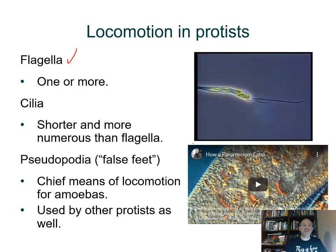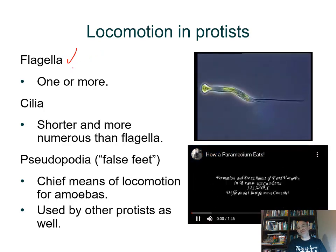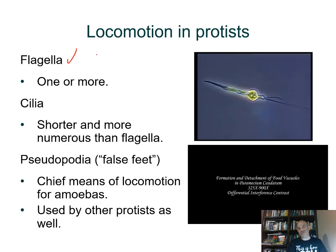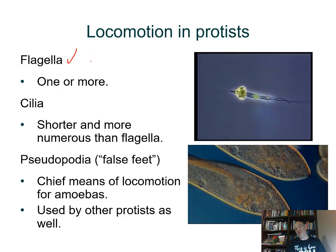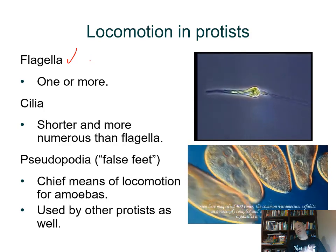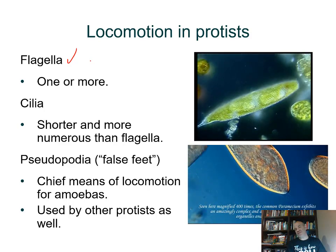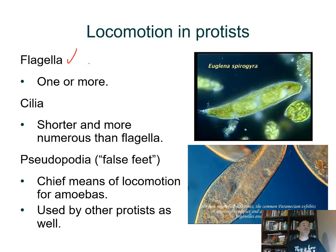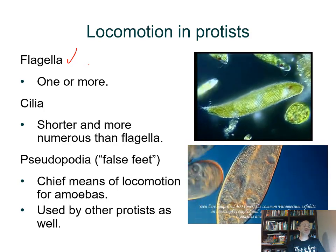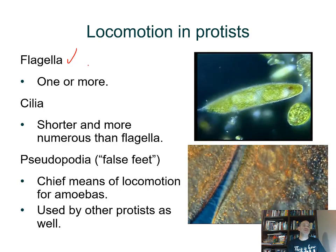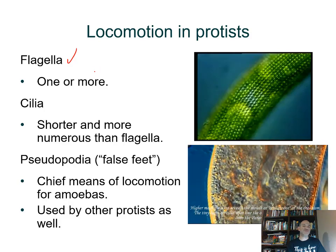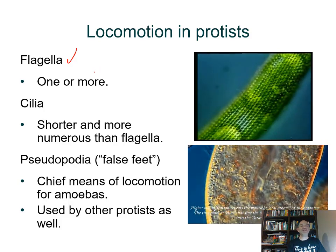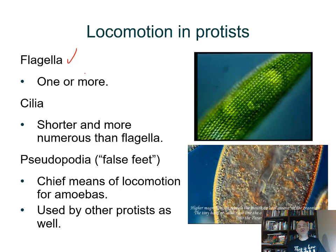Others use cilia, like you'll see in the paramecia video. Cilia are like fine, little versions of flagella, but usually numerous and beating in a coordinated fashion. Cilia are not unique to protists — we have cilia in some of our tissues, for example lining the inside of our respiratory tract. The hair-like structures are used to move around.